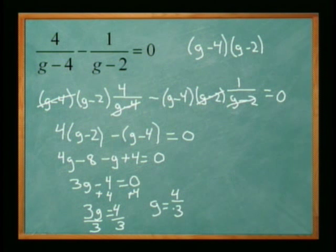So when we see the variable in the denominator, you multiply by the common denominator to get it out of there and up to the numerator so we can solve it.